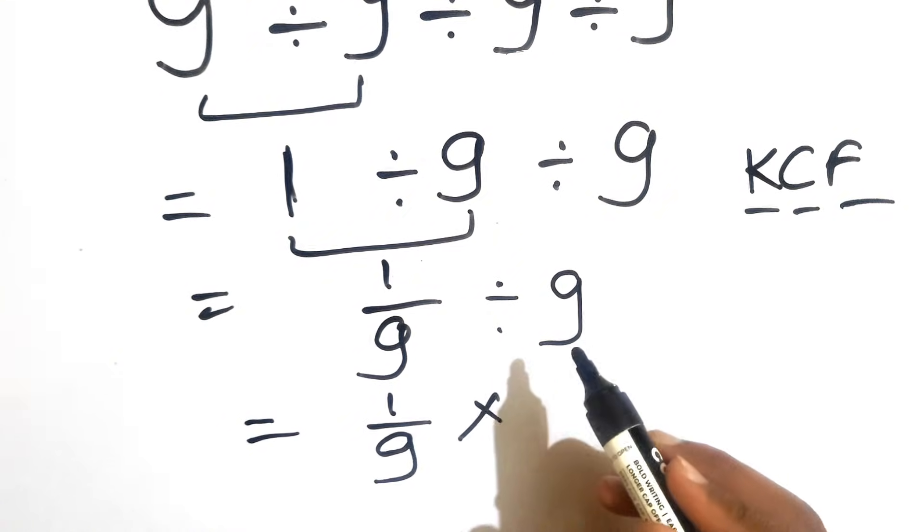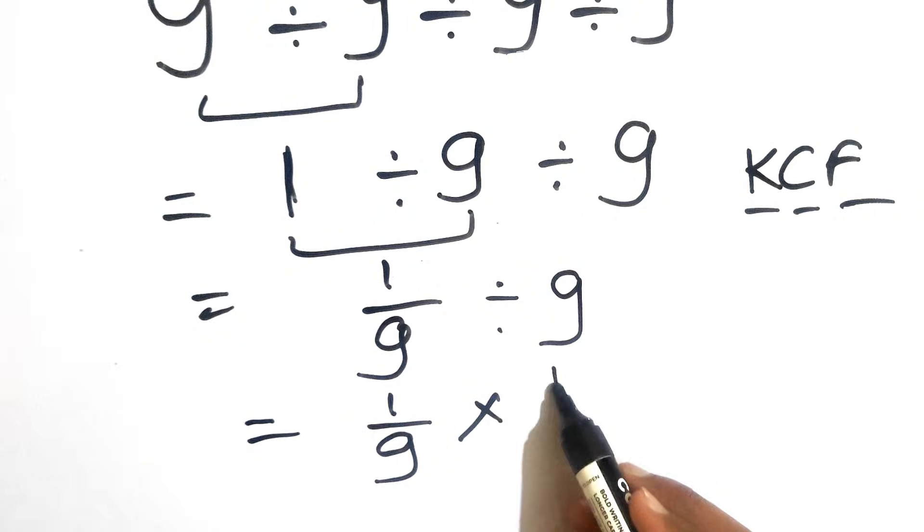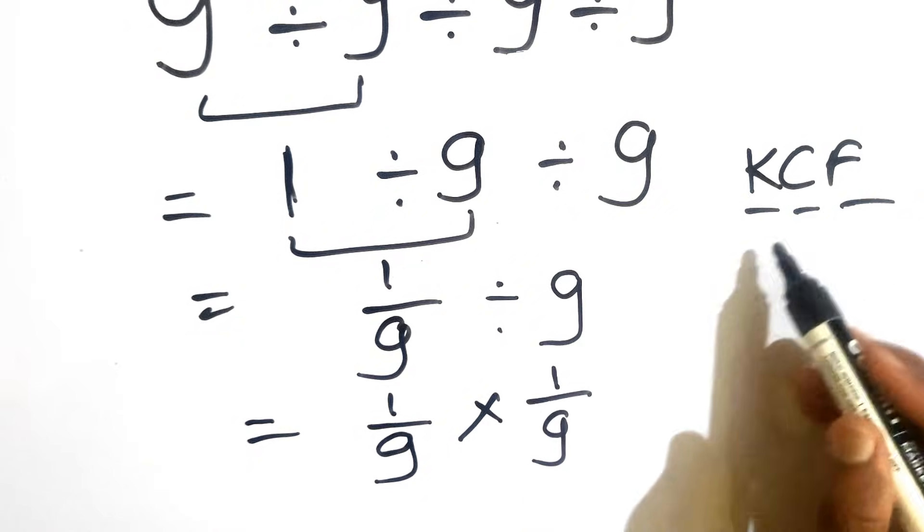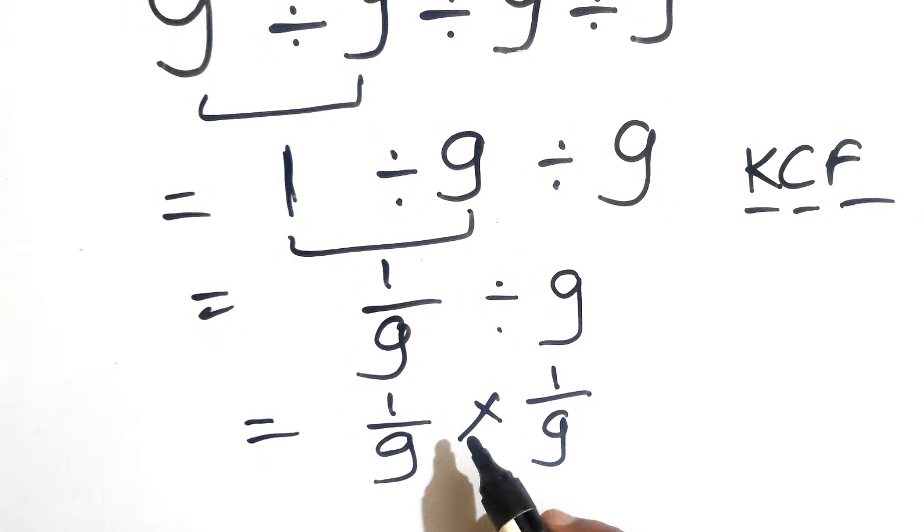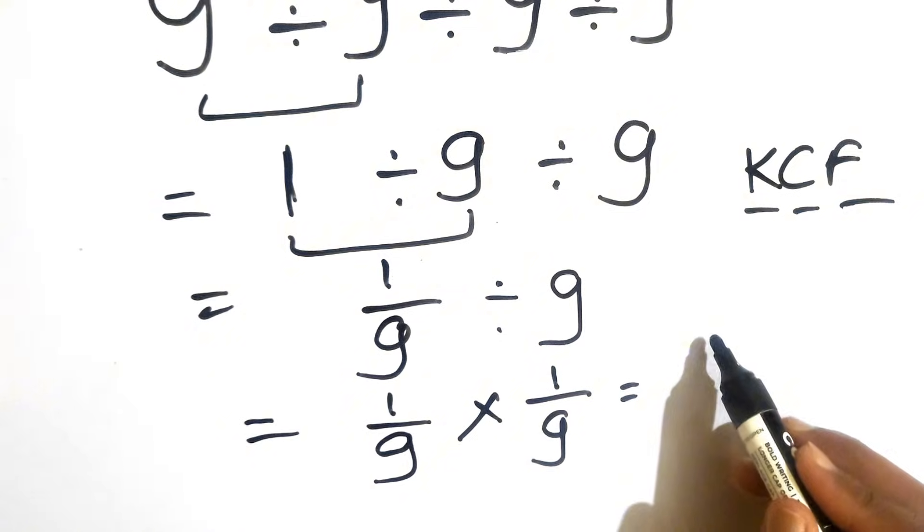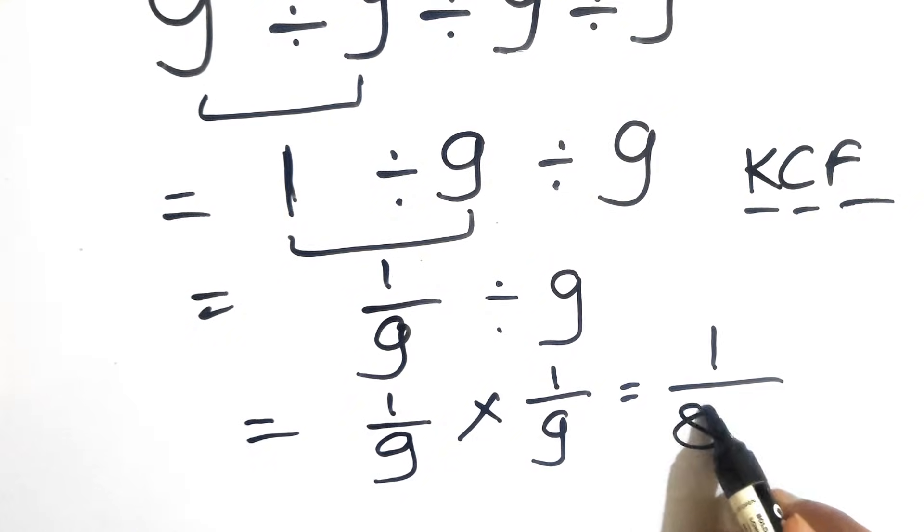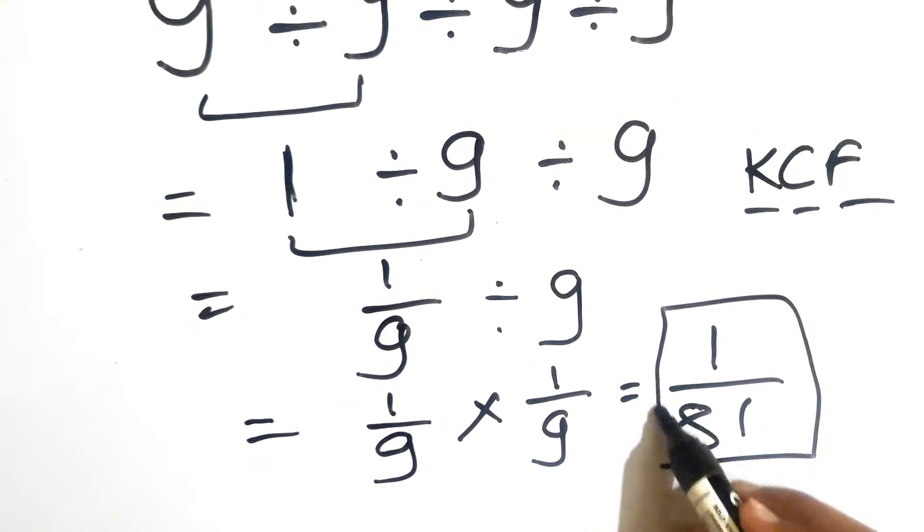So we have 1 times 1 over 9 times 9, that gives us 1 over 81. This is the final correct answer.